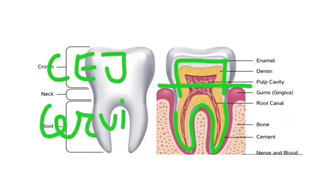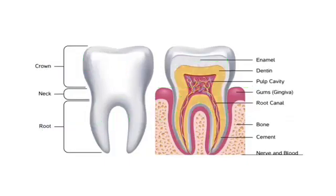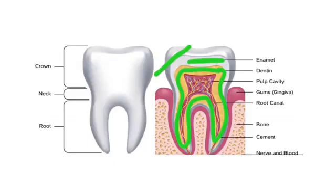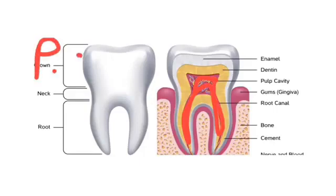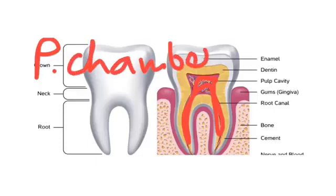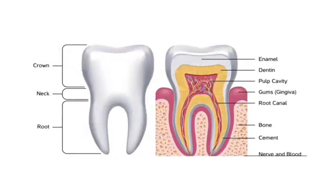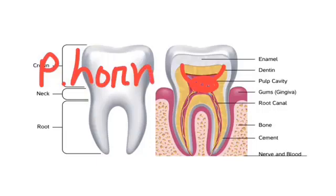The CEJ is also known as the cervical line. The bulk of the tooth is formed by dentin, which is below enamel in the crown portion and below cementum in the root portion. The center of each tooth has a space containing pulp tissue. This space is called the pulp chamber in case of the crown and the pulp cavity in case of the root portion. The pulp tissue in the pulp chamber may extend toward the incisal edge or occlusal surface — this is known as the pulp horn. The pulp cavity in the root portion is a collection of canals, each known as a pulp canal.